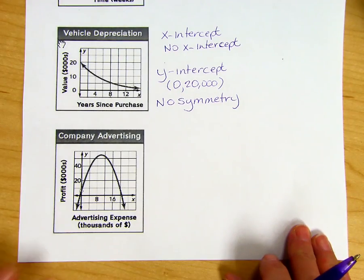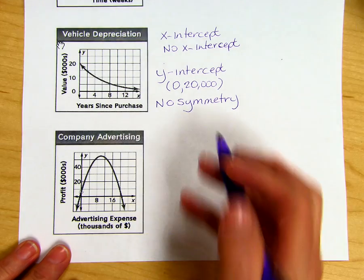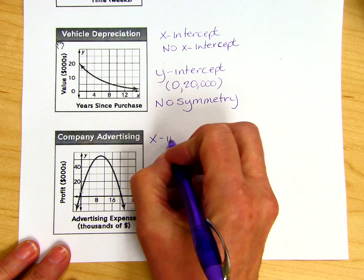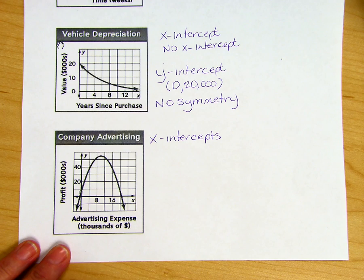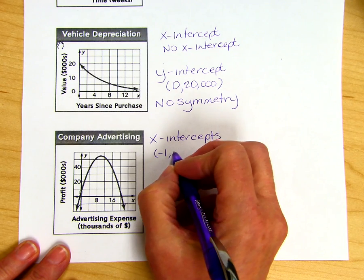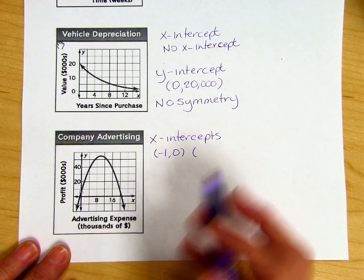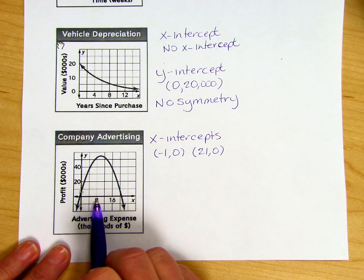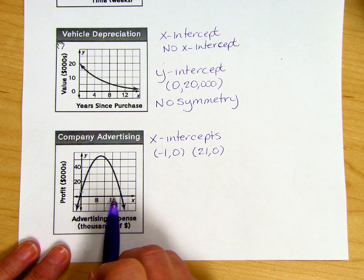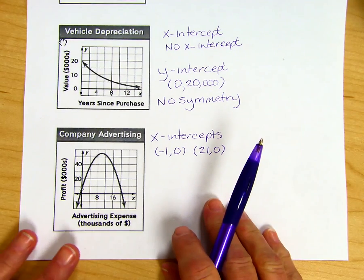Our final example is company advertising. We have another curve and this time it looks like we have two x-intercepts. One occurring at negative 1, 0, and the other one is occurring over here at 21, 0. I'm estimating since this is counting by 4s - you have 4, 8, 12, 16, 20, and this is a little bit past that, so we'll go with 21. So those are the x-intercepts.